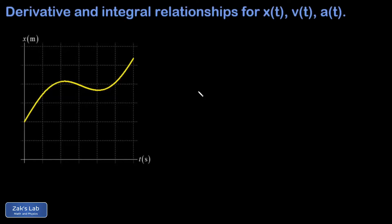In this video, we use position-time and velocity-time graphs to establish the derivative and integral relationships between position, velocity, and acceleration, and then we finish things up with a couple examples.